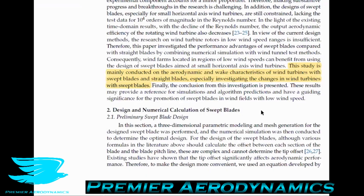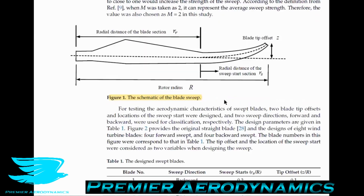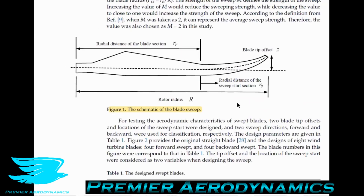In this study, it's mainly conducted on the aerodynamic and weight characteristics of wind turbines with swept blades and straight blades, especially investigating changes in wind turbines with swept blades. Figure one shows the schematic of the blade: the first part is fairly characteristic, going from the wing root out at a fairly sharp angle, then tapering off towards the wing tip. For testing the aerodynamic characteristics of swept blades, two blade tip offsets and locations of the sweep start were designed, and two sweep directions — forward and backwards — were used for classification.